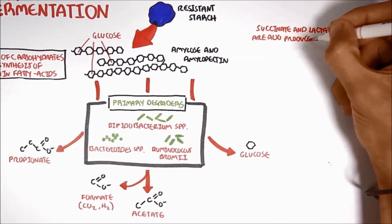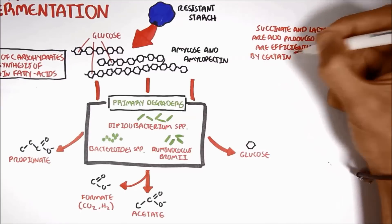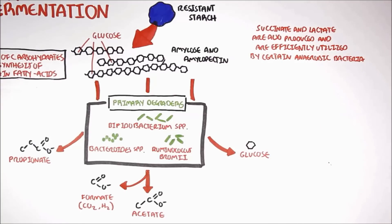Now, succinate and lactate are also produced by these primary degraders and are efficiently utilized by certain anaerobic bacteria.